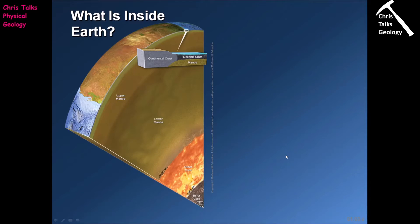You're probably thinking: how do we split up these layers? We're going to discuss one of the ways in which we can separate them. We'll start by thinking about the crust, which is the layer that forms a thin solid sheet on the surface of the earth.